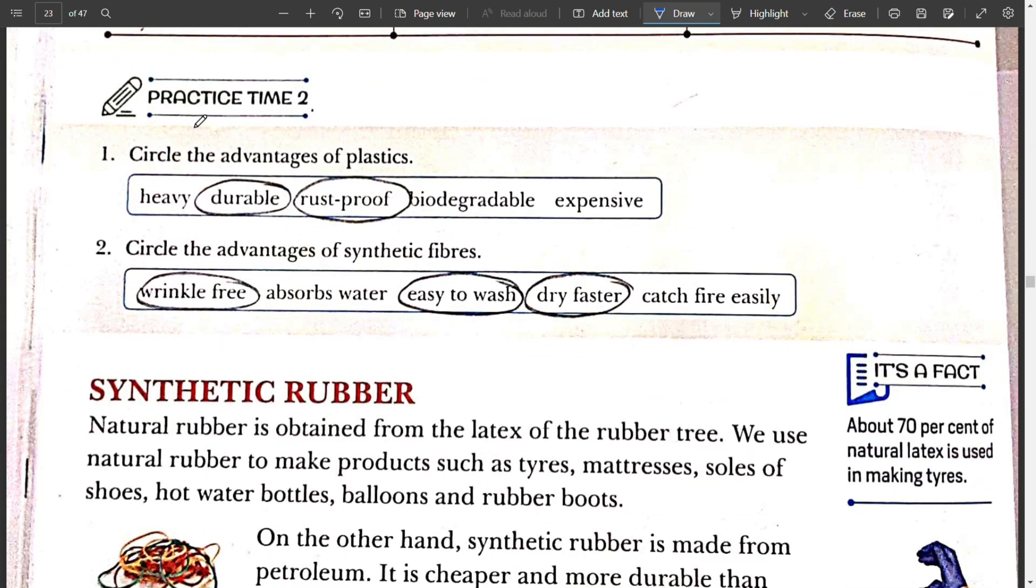Next, practice time 2. Circle the advantages of plastic. So here there are few words written. We have to circle the advantages of plastic. So plastics are durable. Plastics are rust proof. Second, circle the advantages of synthetic fibers. Synthetic fibers are wrinkle free, easy to wash and dry faster.